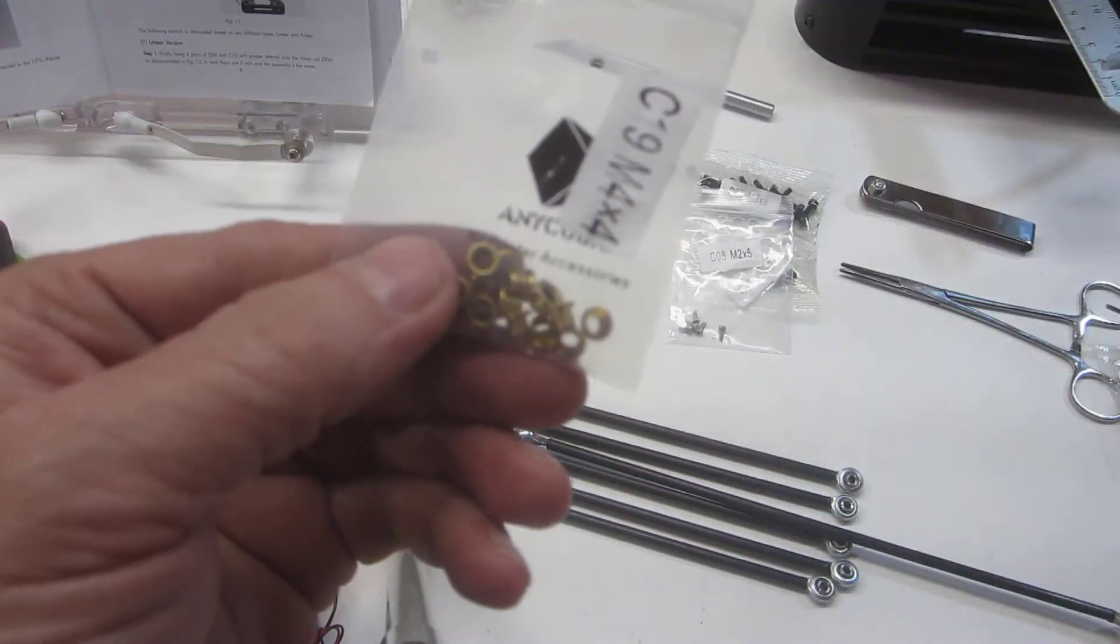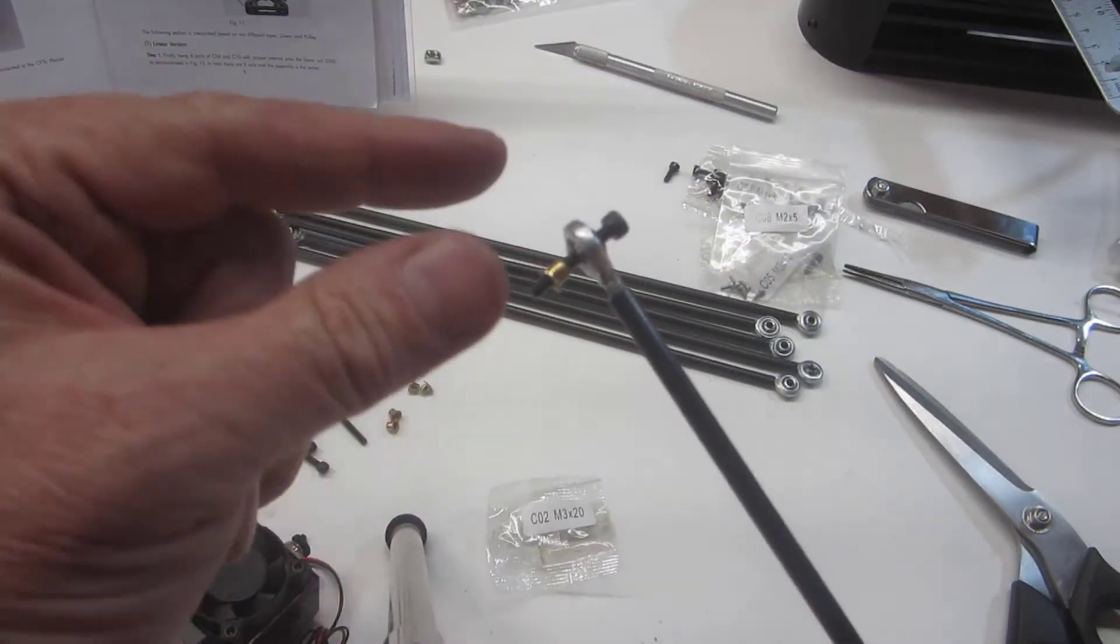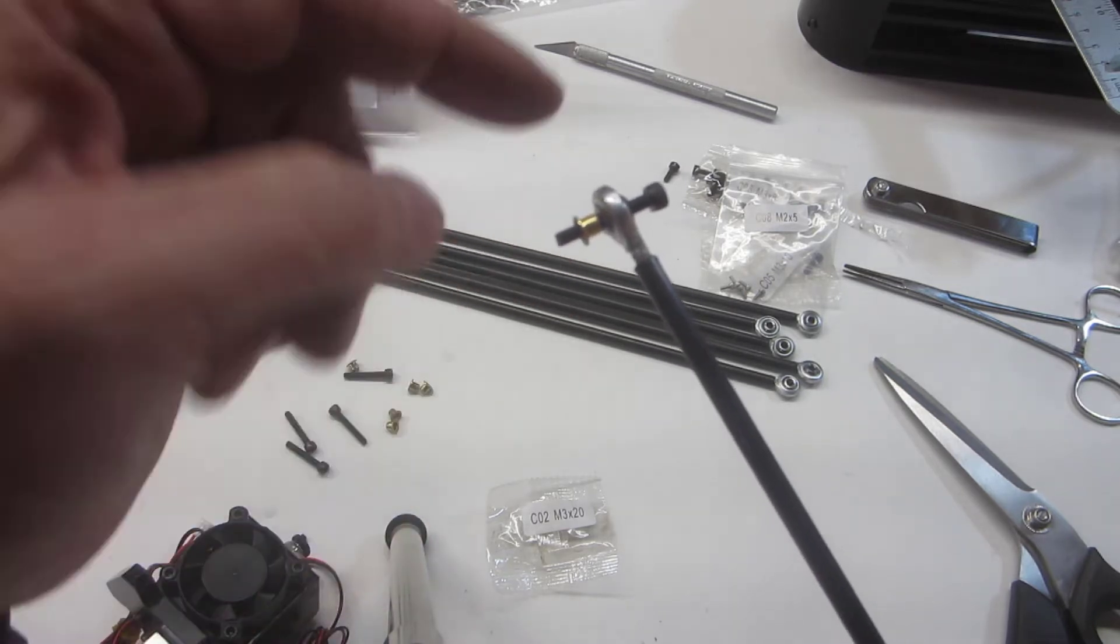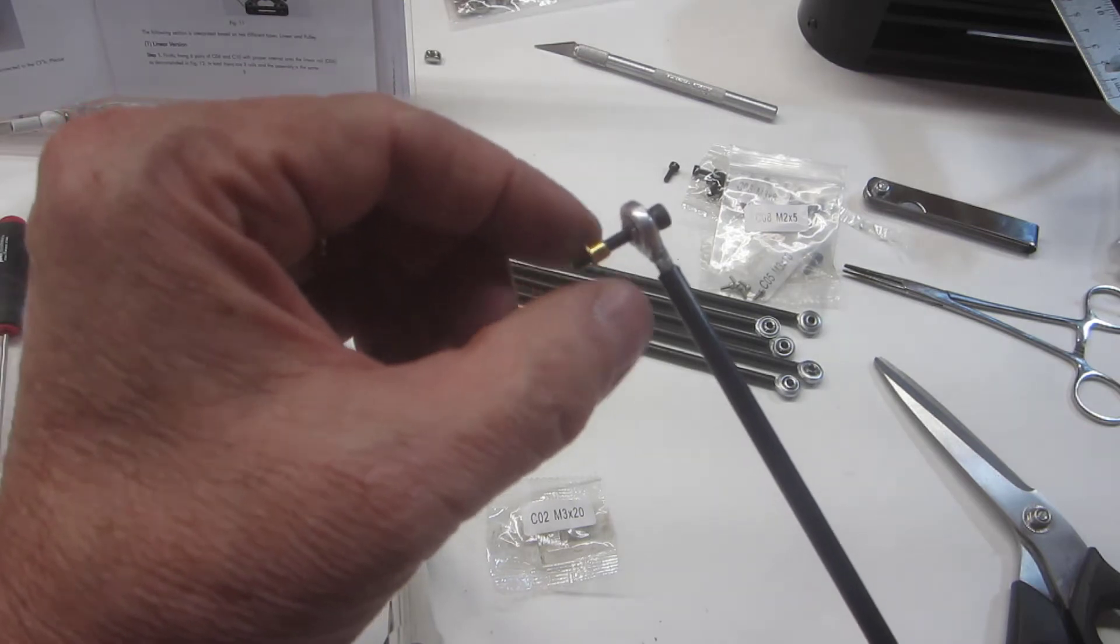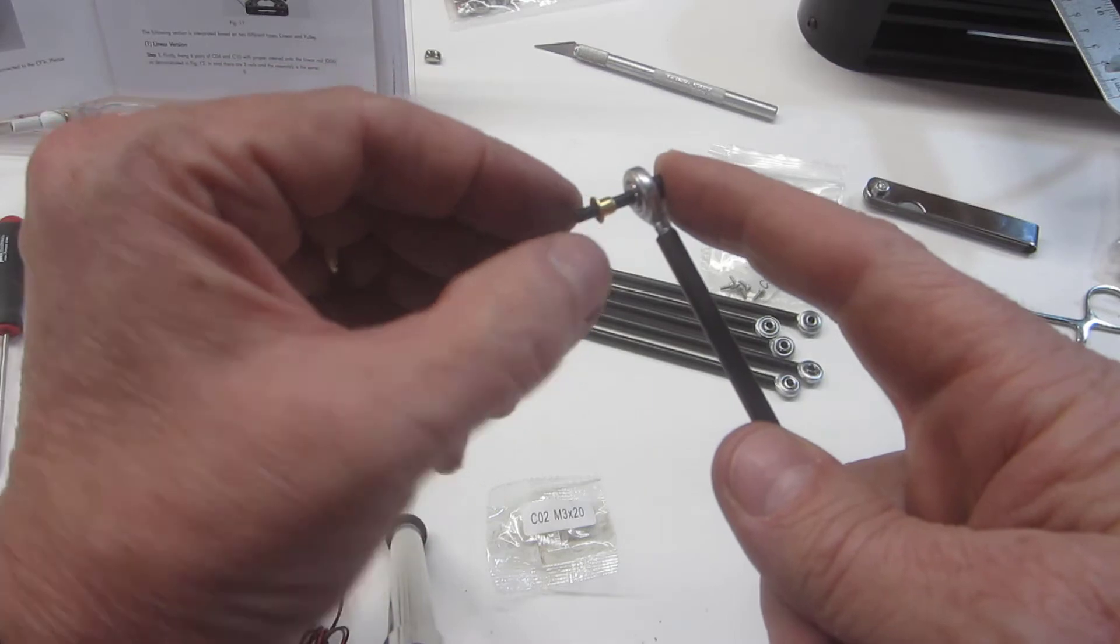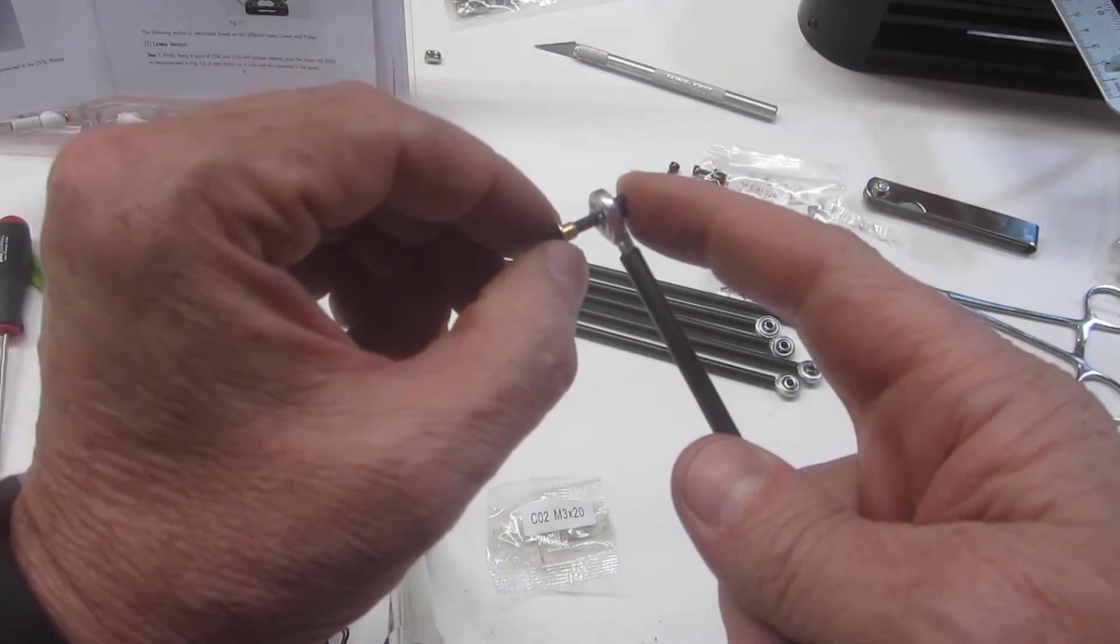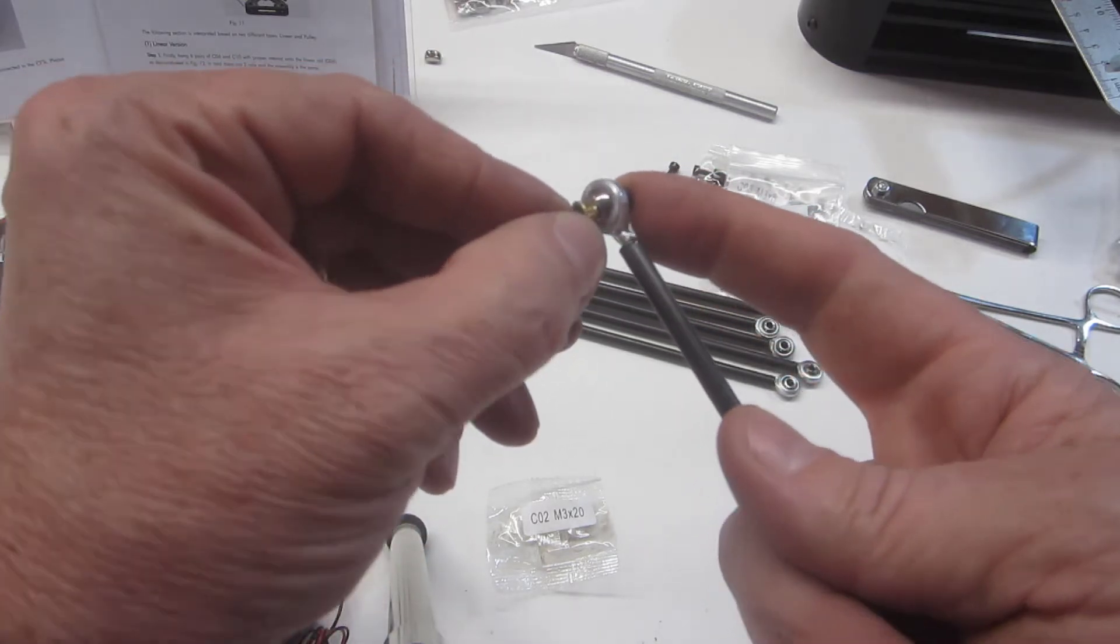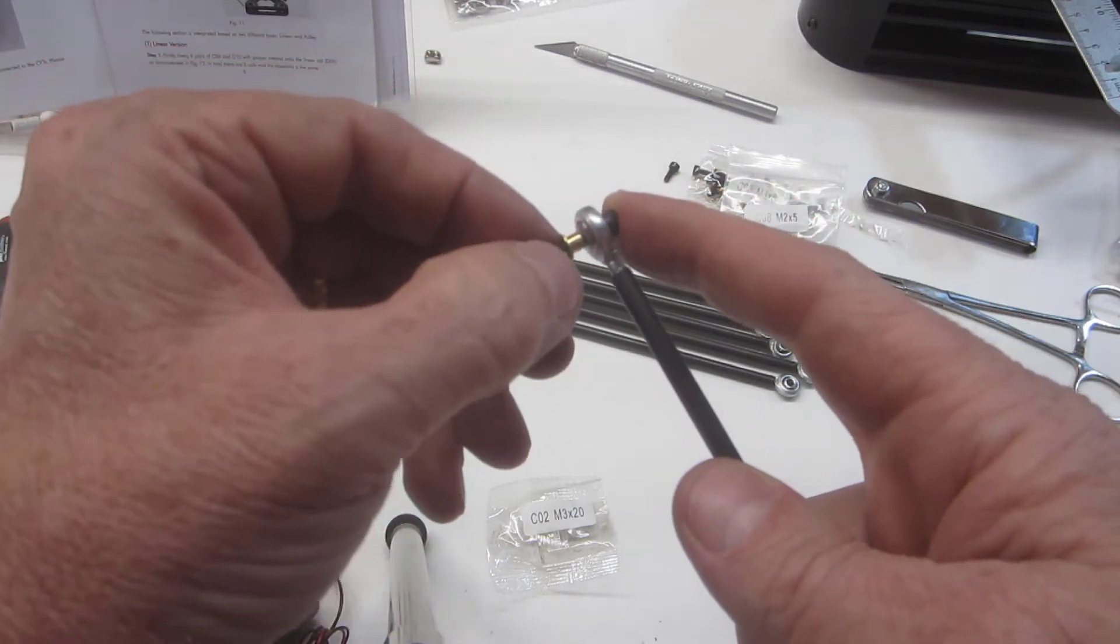So this bolt right here is an M3 by 20 millimeter, and then the little copper spacer is going to go on here. Notice that the washer end of the copper spacer is facing outward and the narrow end of the copper spacer is toward the rod end. I think these little rod links are actually made for radio control cars.